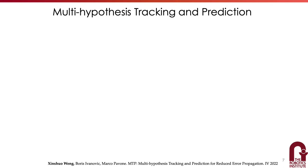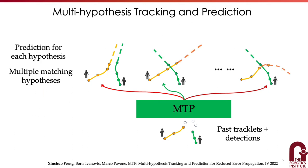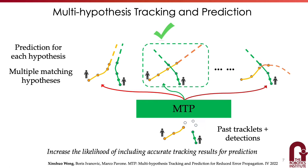Given all these observations, we believe that we need a mitigation strategy in order to reduce error propagation from perception to prediction. Therefore, we propose Multi-Hypotheses Tracking and Prediction, or MTP. The idea of MTP is very straightforward: given past tracklets and current detections as inputs, MTP explores multiple matching hypotheses. Each of these hypotheses could lead to a different set of tracking results. On top of that, we run trajectory prediction for each hypothesis, resulting in a larger set of prediction results. By reasoning predictions over multiple tracking hypotheses, we can increase the likelihood of including accurate tracking results for prediction.